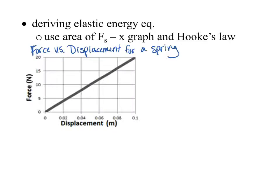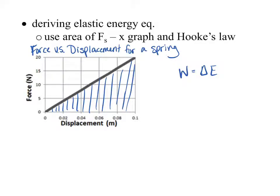Those two are directly proportional. Now, we can actually use a graph like this to find the elastic energy equation. Do you remember what it is? It's one-half kx squared. This is how you derive it. We're going to start with our work-energy theorem: work is equal to change in energy. We have a force-displacement graph, and we know that the area under a force-displacement graph is work — because you have force times displacement, and the triangle shape gives us one-half. So, area is equal to the change in energy.